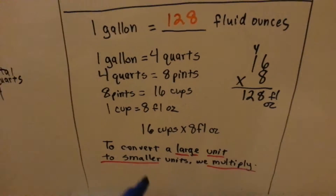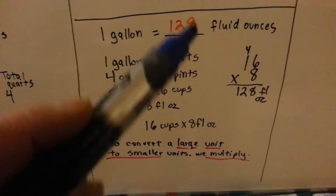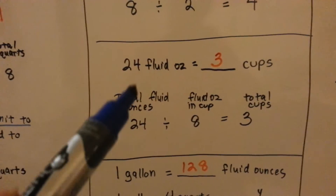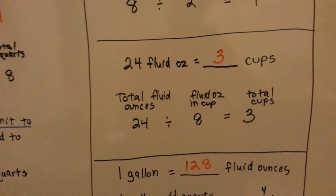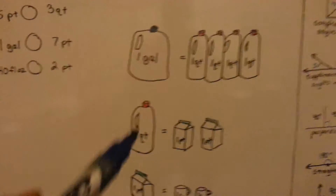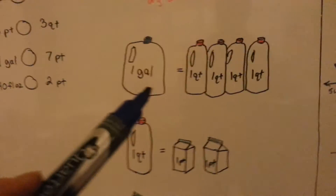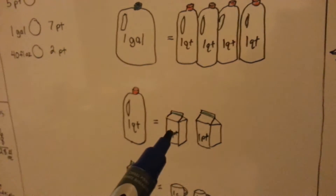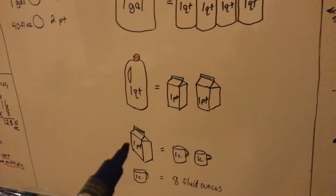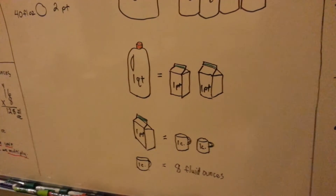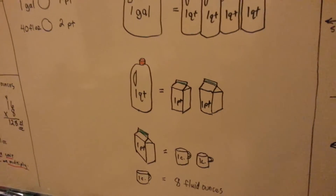So remember: to convert a large unit into smaller units, we multiply. To convert smaller units to large ones, we divide. A gallon has 4 quarts. A quart has 2 pints. A pint has 2 cups. And 1 cup has 8 fluid ounces.